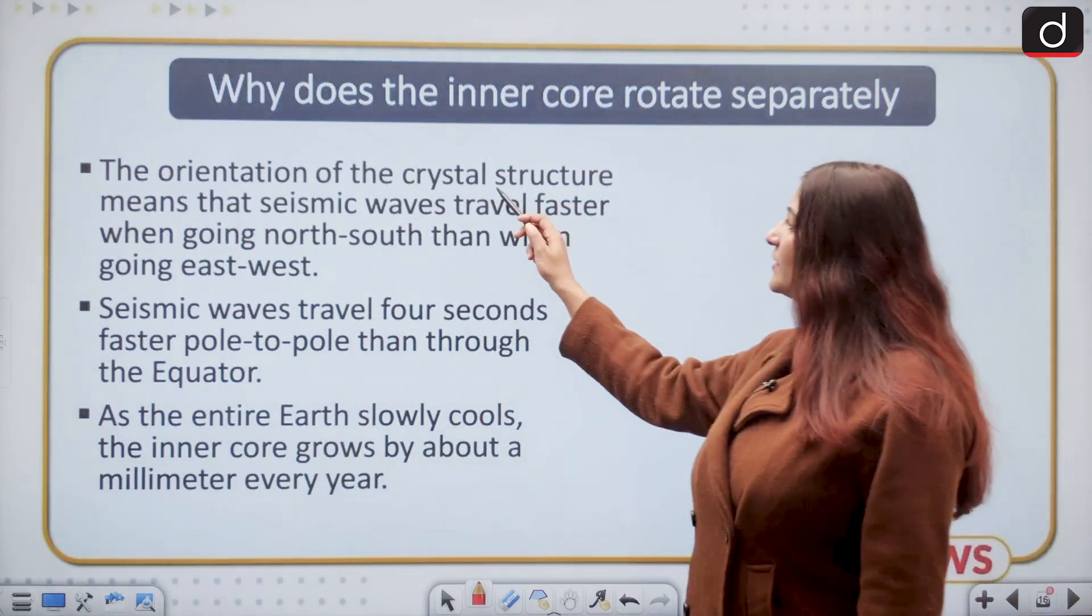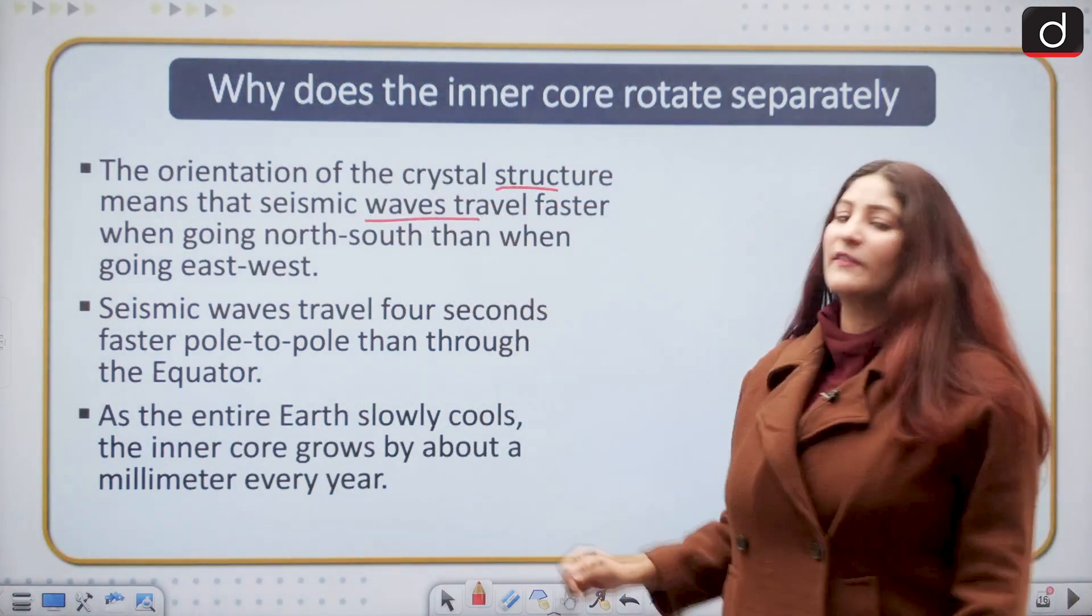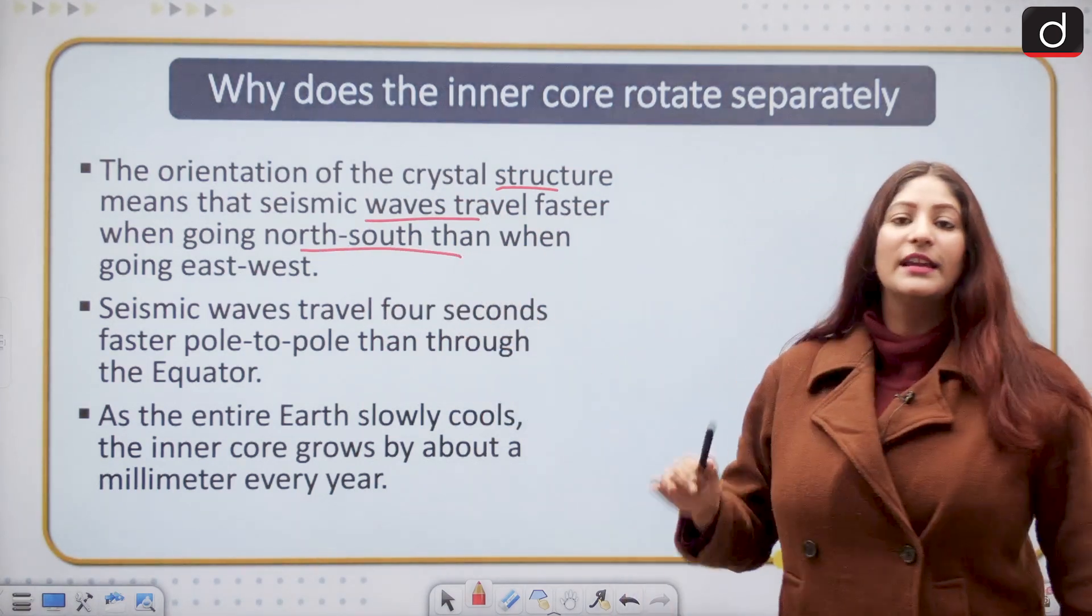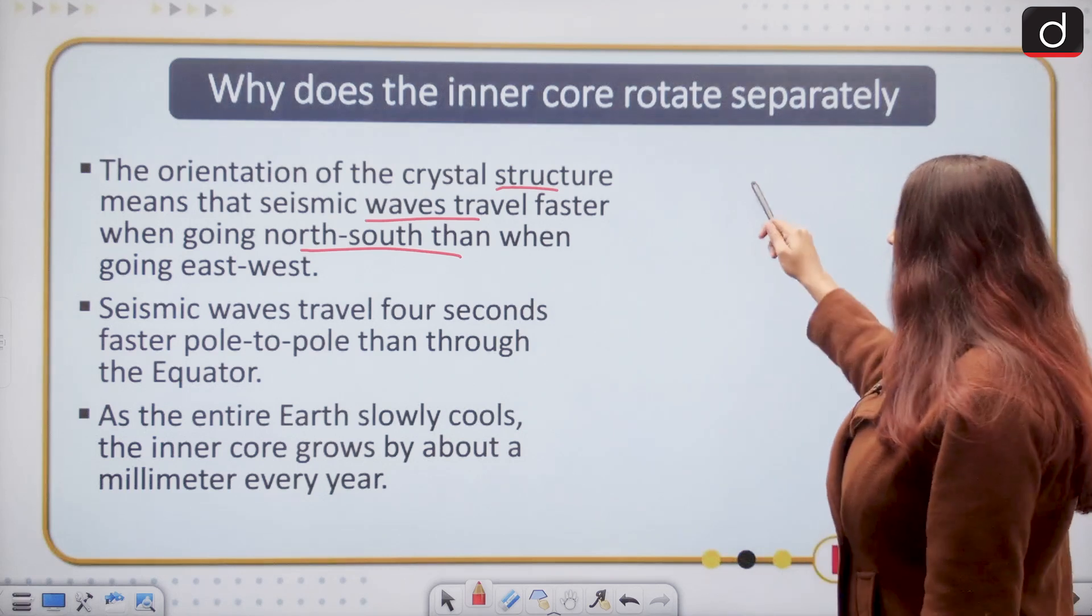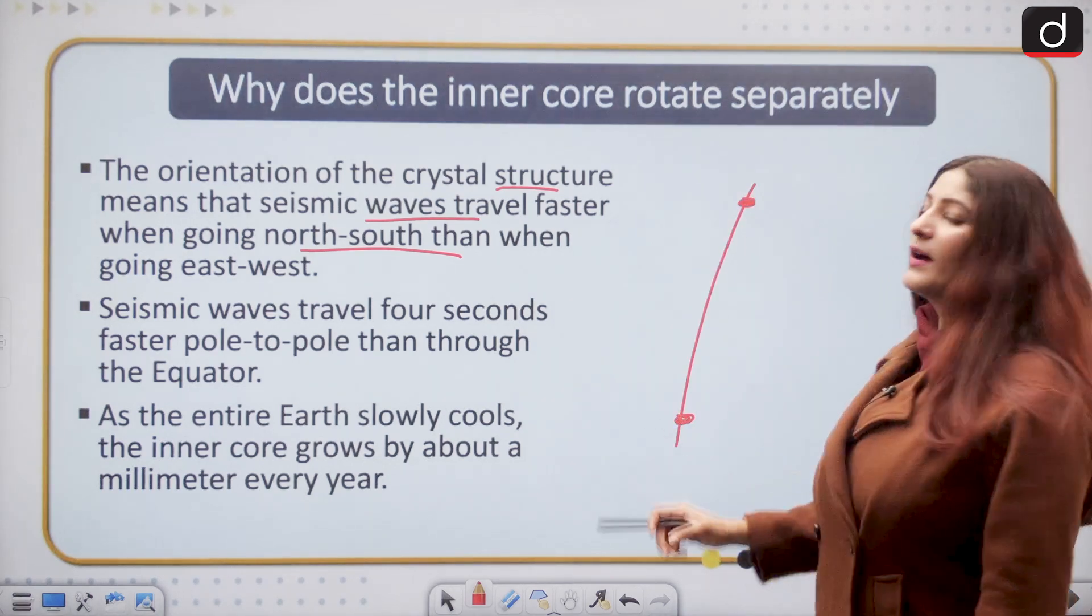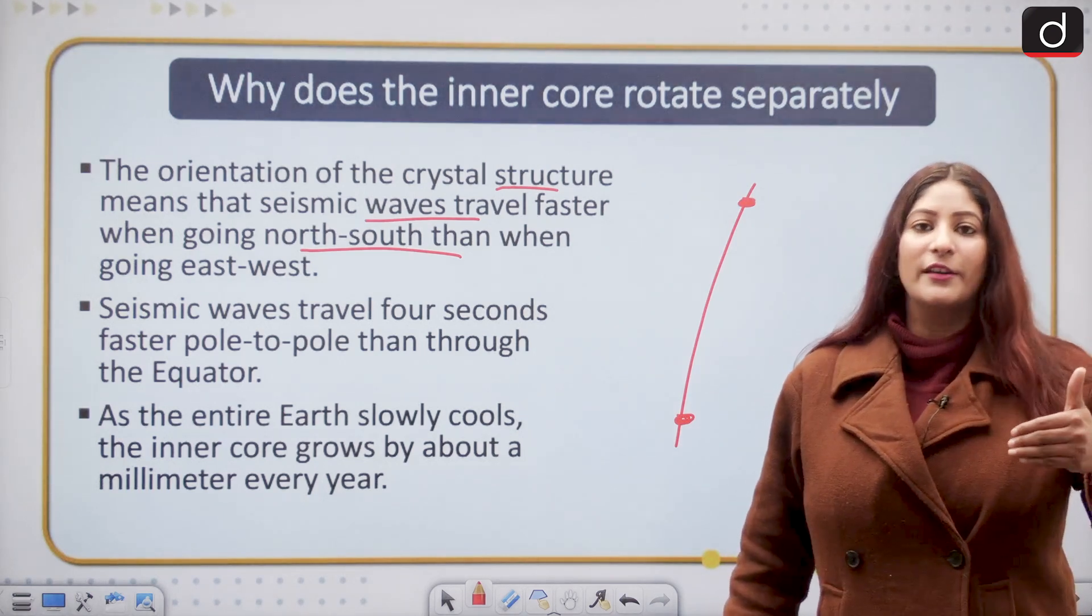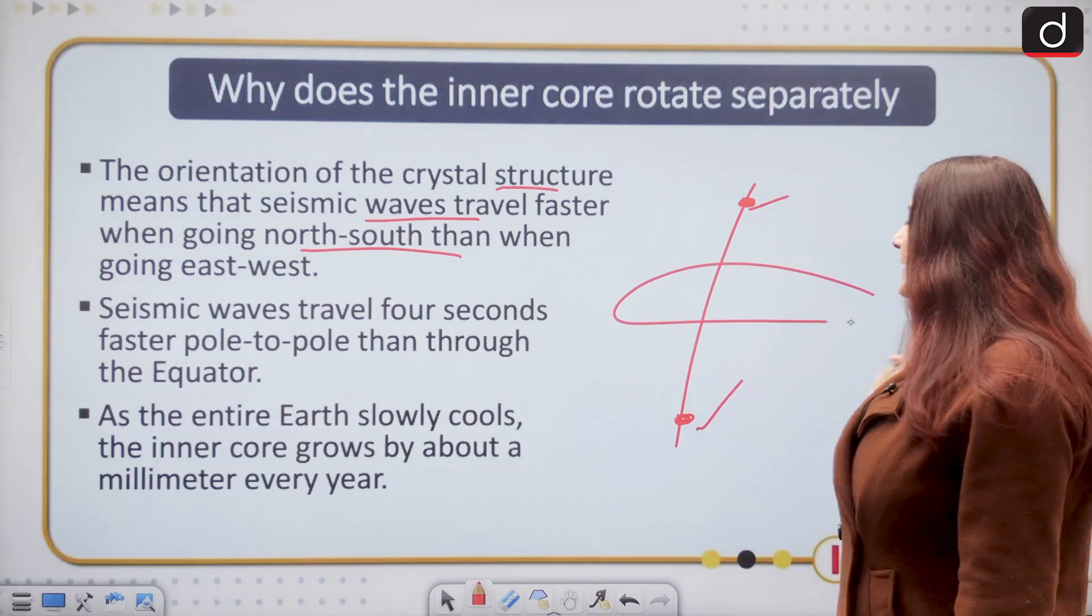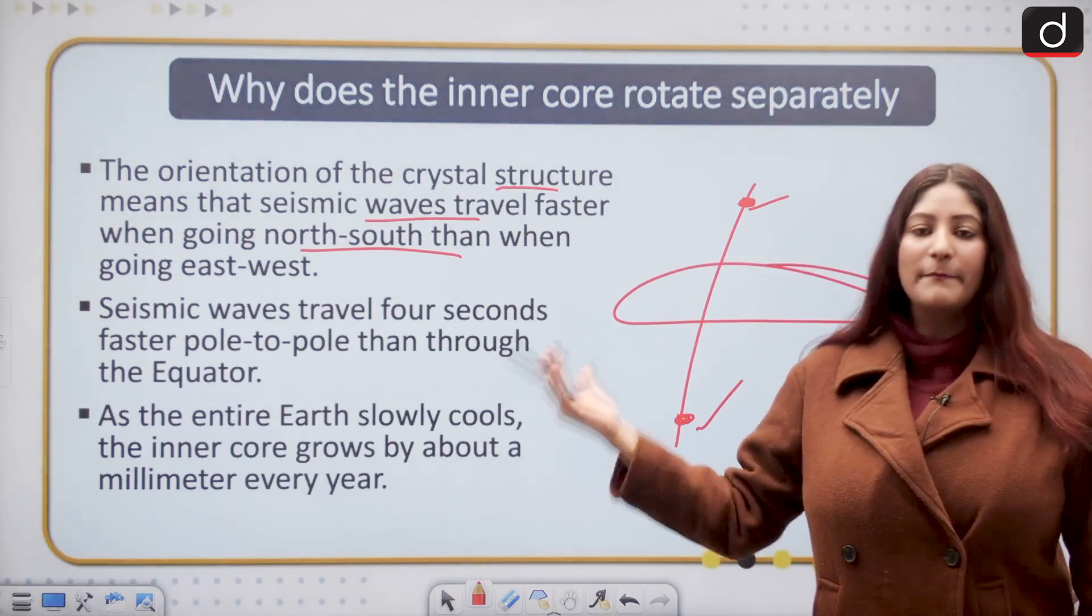The orientation of the crystal structure means that seismic waves travel faster when going north-south than when going east-west. That is why seismic waves will travel faster at the pole and slower when it comes to the equator.